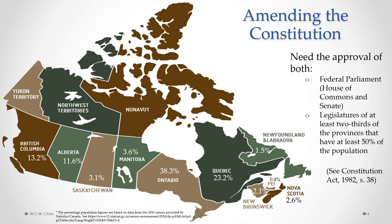Looking at the map with the percentage population figures for each province, some quick math reveals that to satisfy the 50 percent population requirement, we need the approval of at least either Ontario or Quebec for any constitutional amendment to be successful. If both Ontario and Quebec do not approve of a constitutional amendment, it is simply not possible based on current census figures to meet that 50 percent population requirement.